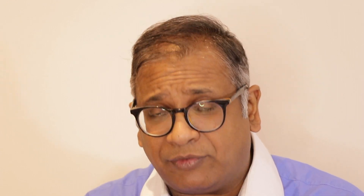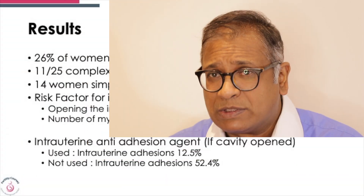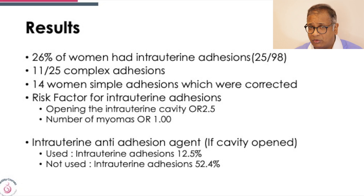Diagnostic hysteroscopy was done 6 to 8 weeks later. And this is surprising. The results do indicate that adhesions form intrauterine. We all know how complicated it is to treat these adhesions and create an endometrium that grows. Asherman's is one of the biggest challenges we face. If you open the cavity, the first complication that stares you in the face is intrauterine adhesions — 26 percent of women had intrauterine adhesions. 11 out of 25 had complex adhesions, and 14 women had simple adhesions which were corrected.